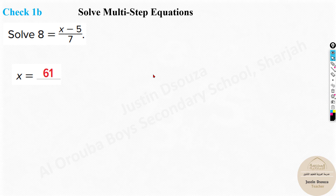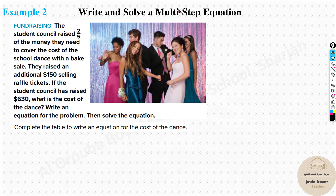Now we have some real-world multi-step problems. The student council raised two-fifths of the money needed to cover the cost of the school dance from a bake sale. They raised an additional $150 selling raffle tickets. If the student council raised $630 total, what is the cost of the dance? Write an equation and solve it.